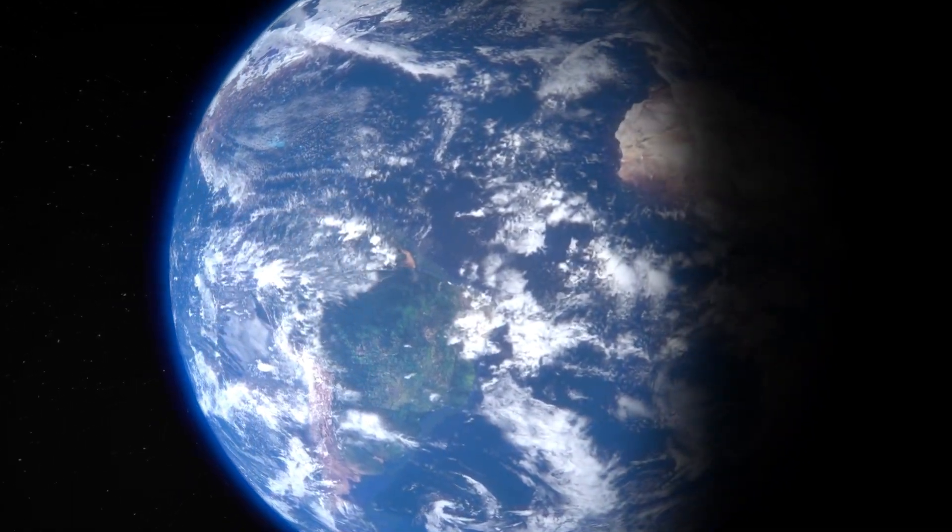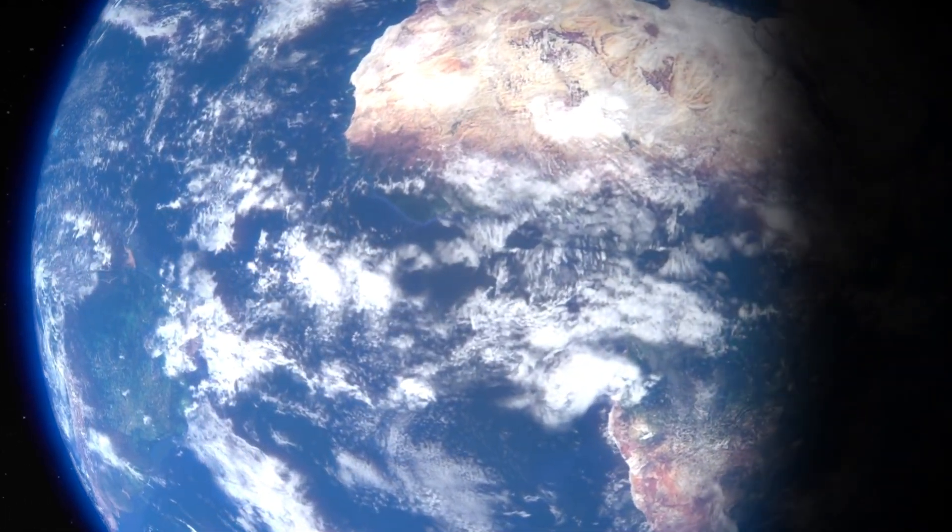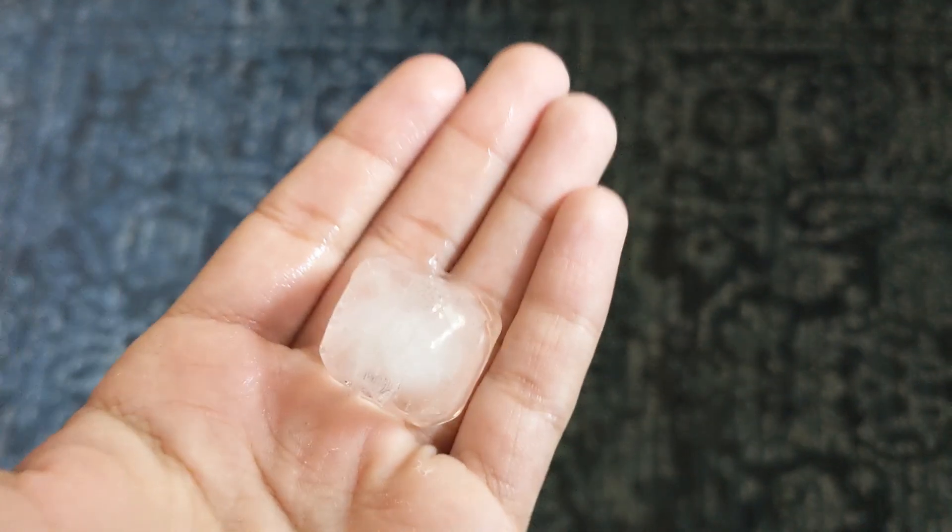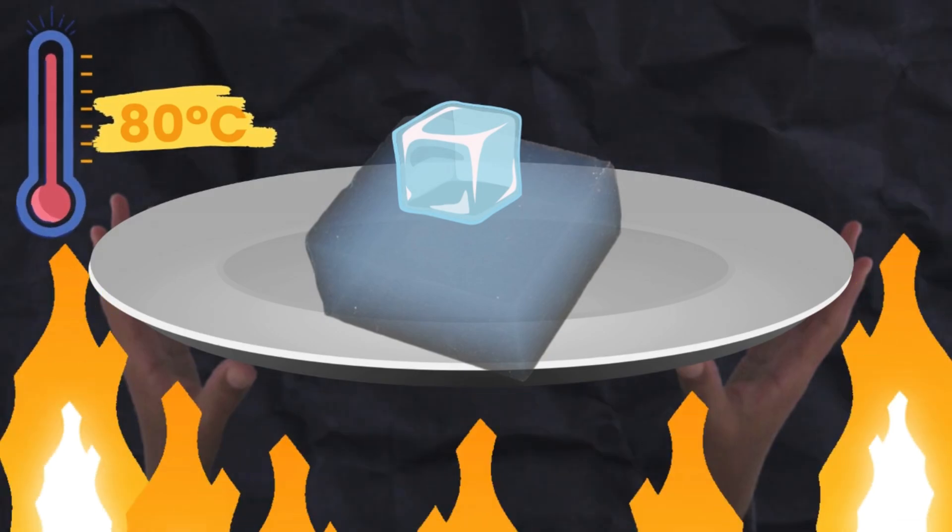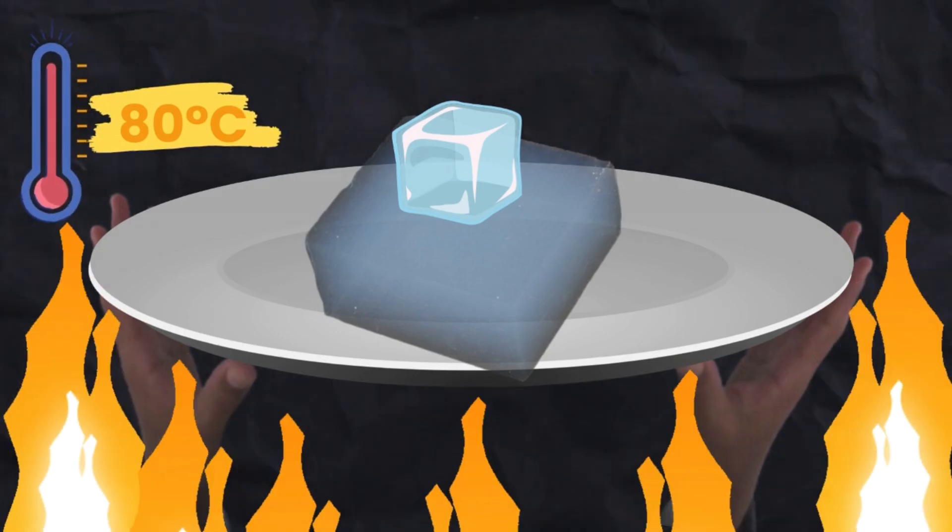Aerogel is the best insulator on the planet. If you were to place some ice on a piece, which was on a plate, and heated that plate up to 80 degrees Celsius, the ice would still not melt.